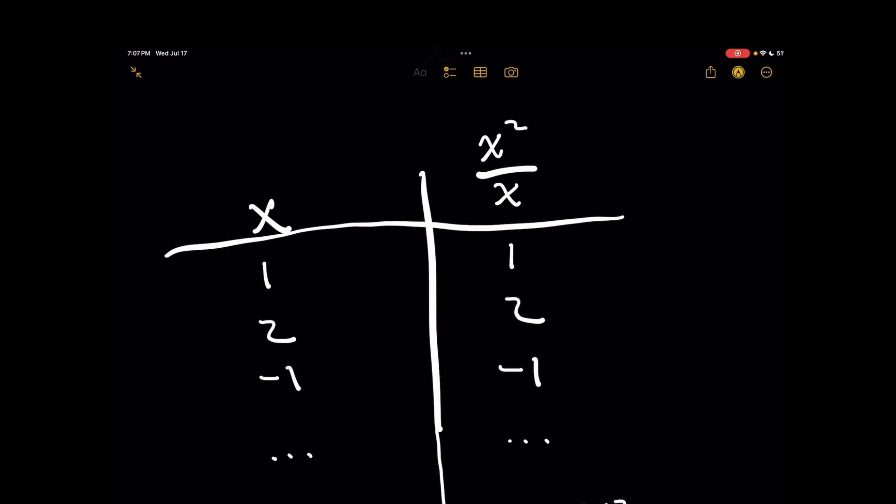And you might be wondering, hey Dave, isn't this pointless? Doesn't x squared over x simplify to x because you can just cross out an x on top and bottom? Well, for the most part, yes.